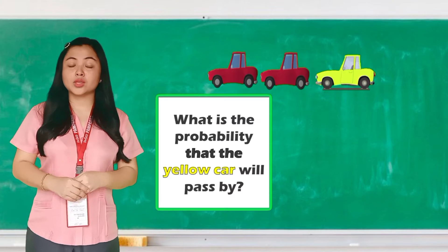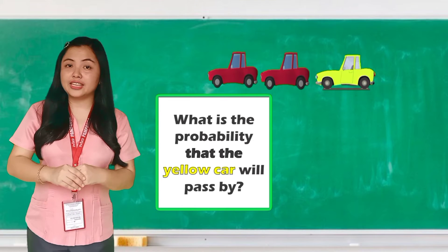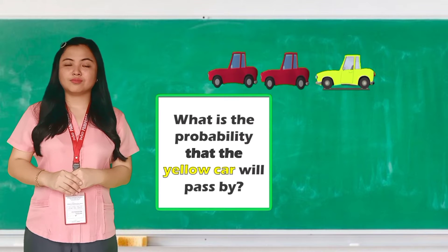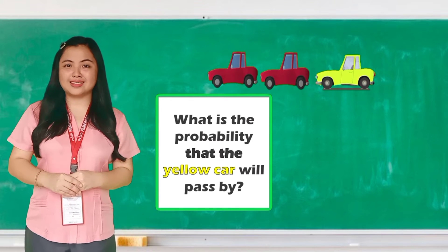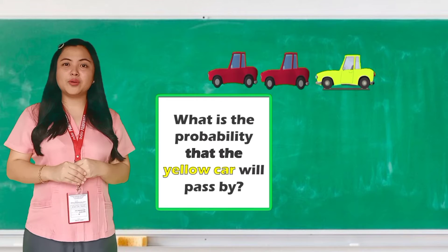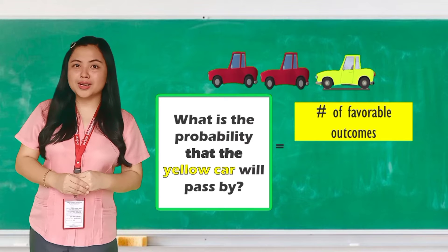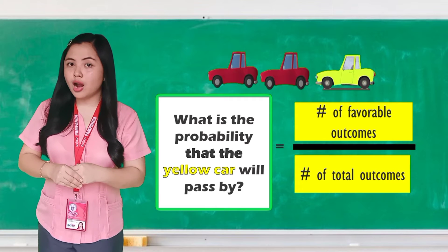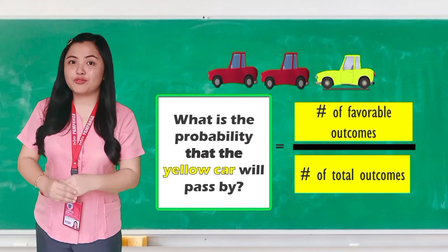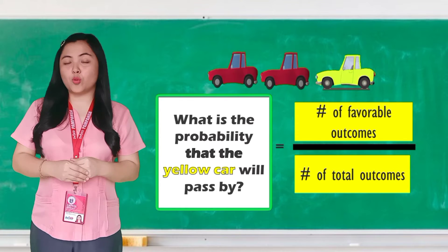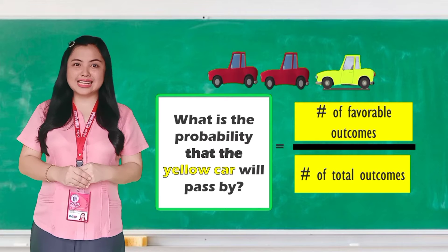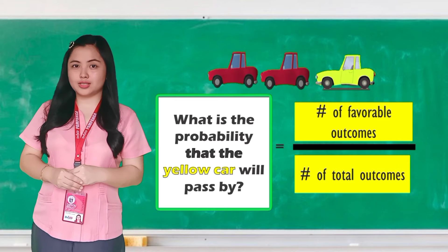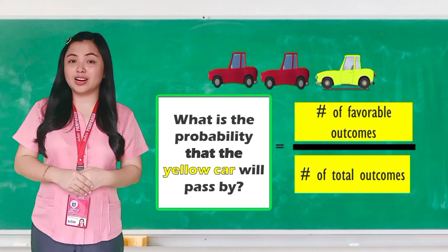First question: what is the probability that a yellow car will pass by? Let's use the formula. The probability of a simple event is equal to number of favorable outcomes over number of total outcomes. The simple event here is that the yellow car will pass by. The number of favorable outcomes is the number of what is being asked in the problem. Since it is asking for a yellow car to pass by, we will count the number of yellow cars. How many yellow cars are there?